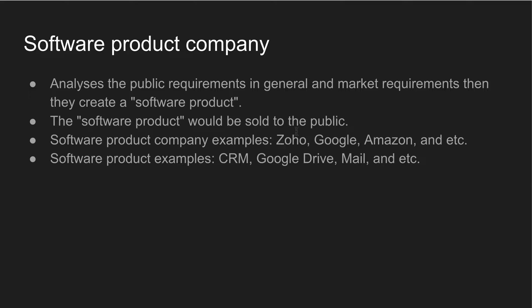For example, in Zoho, there are many software products — Zoho Mail, Zoho CRM, Zoho Reports, Zoho Books. These are all software products. Similarly, Google has Google Drive, Google Mail, Google Sheets, Google Slides — these are all software products. Amazon has great software products such as Amazon Web Services. These are software product suites.